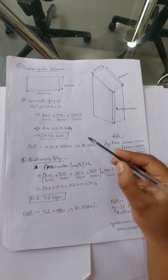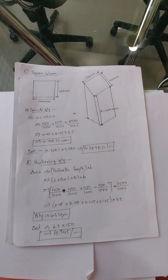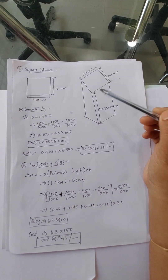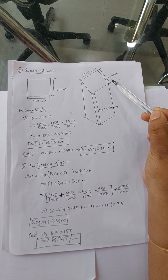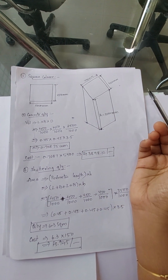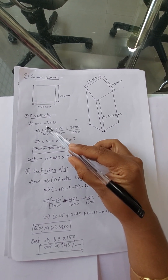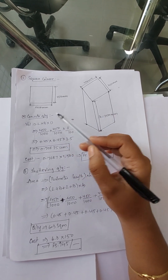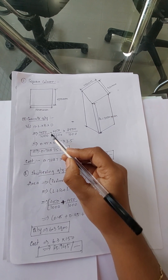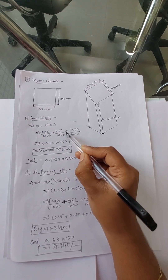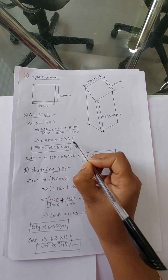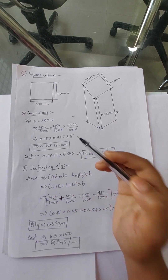Now we will explain the square column. Here you can see the 2D view and 3D view of the square column. The height is 3500 mm and the side equals 450 mm. Since all sides of a square are equal, Volume = 450 ÷ 1000 × 450 ÷ 1000 × 3500 ÷ 1000 = 0.45 × 0.45 × 3.5 = 0.70875 cubic meters of concrete is required.